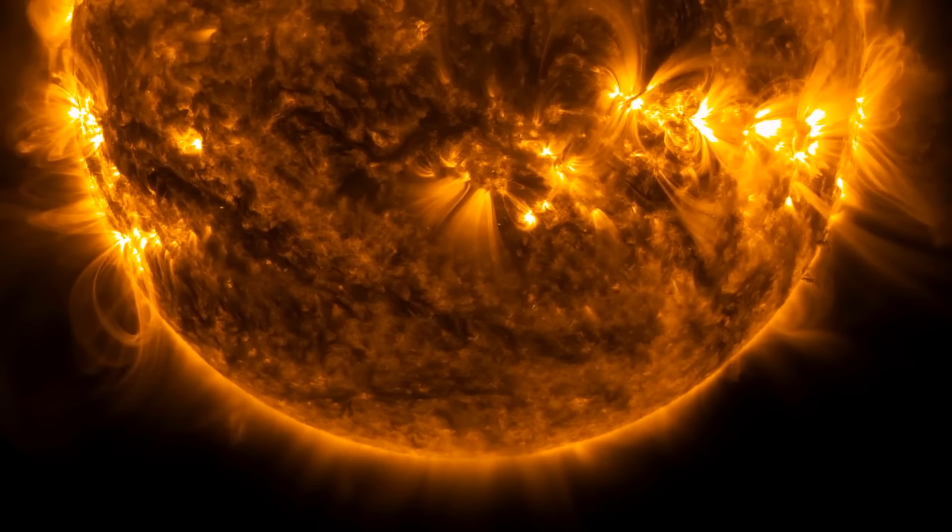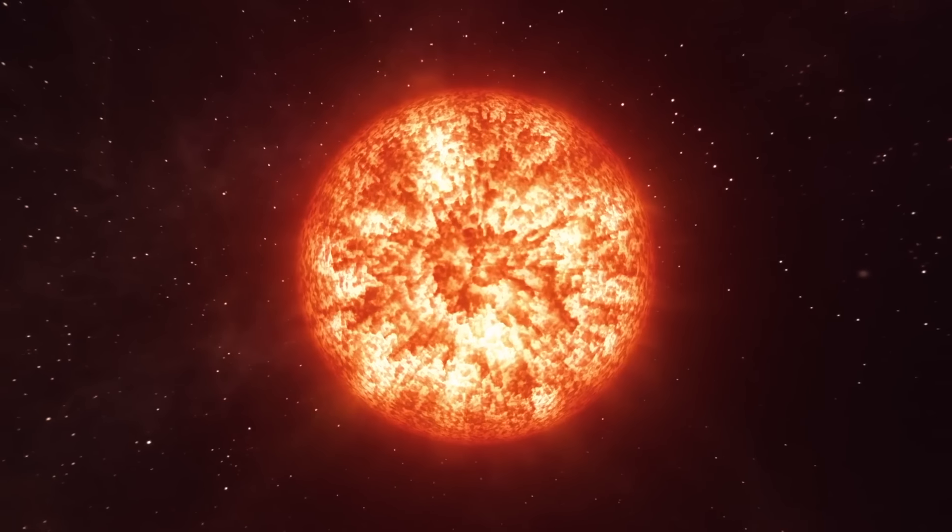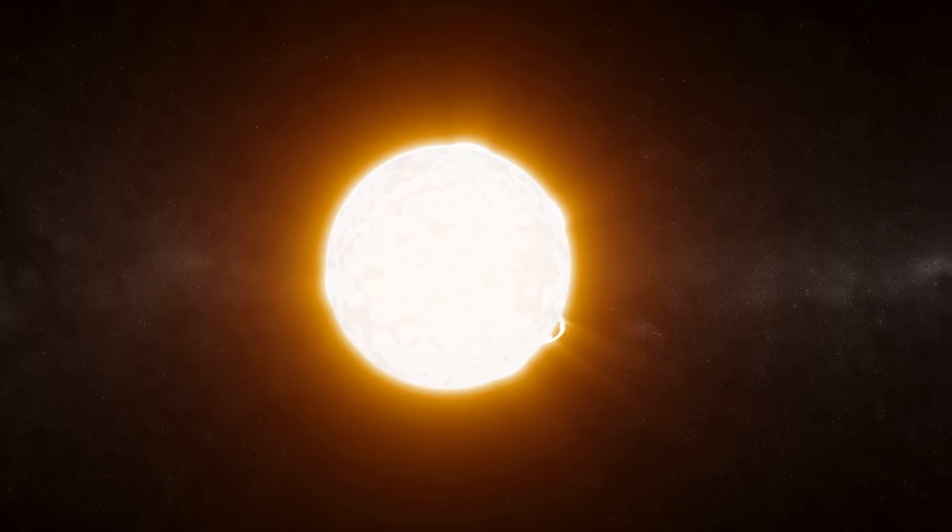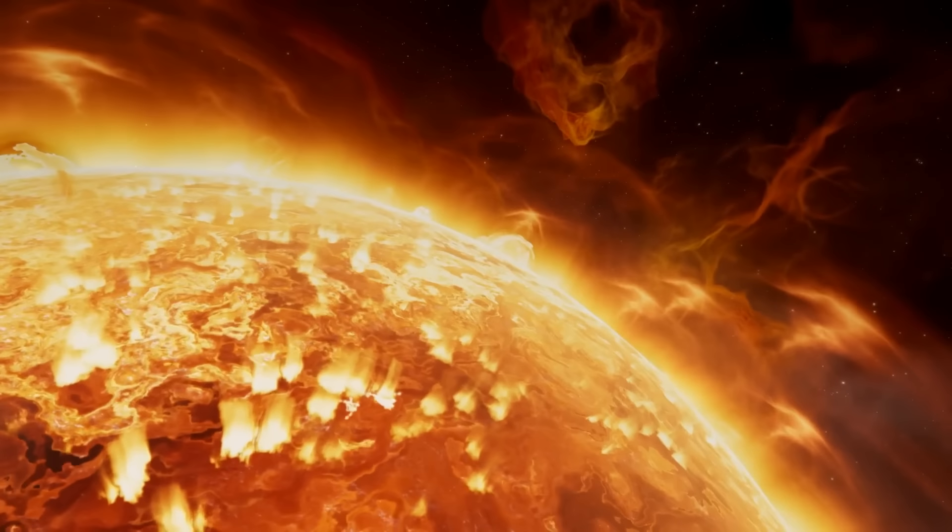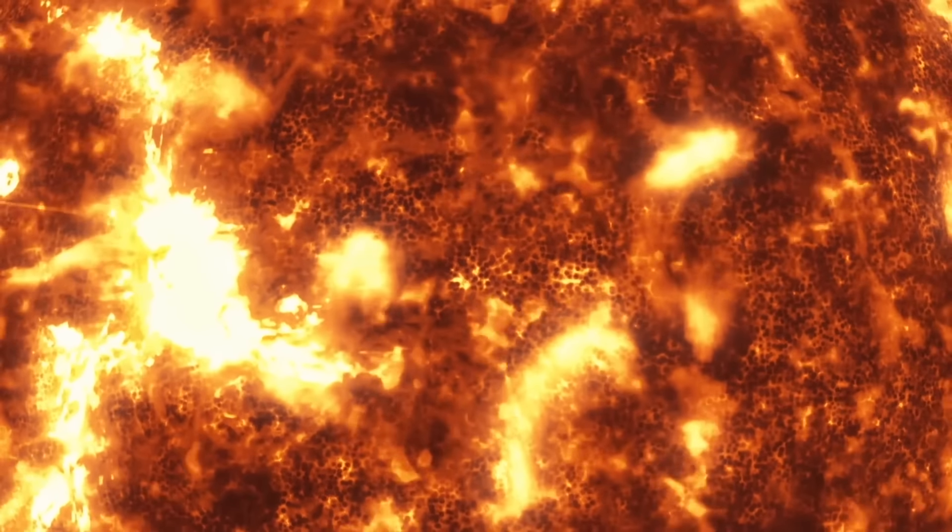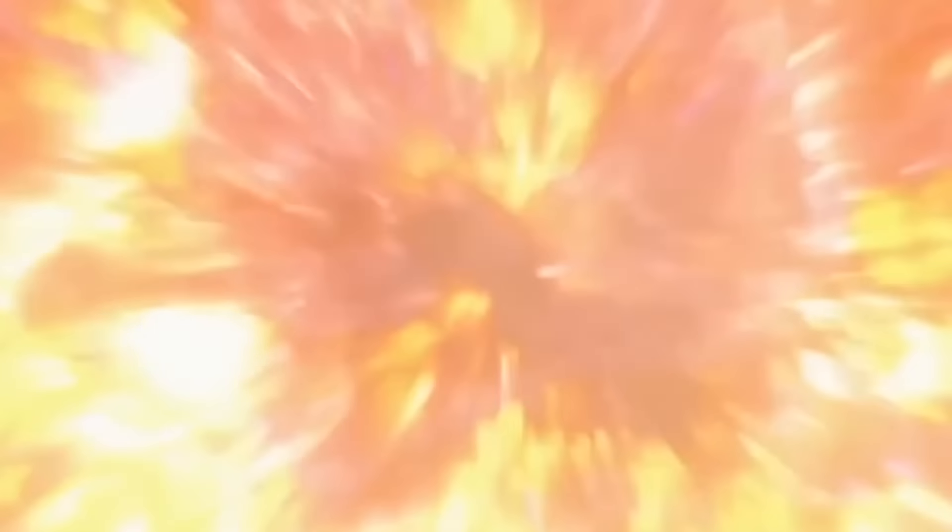The second, a type II supernova, is what we expect Betelgeuse to undergo. This type occurs when a massive star, significantly larger than our sun, depletes its nuclear fuel. The core's collapse causes an explosion of colossal proportions.